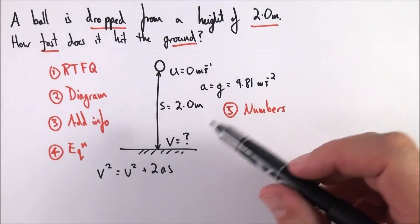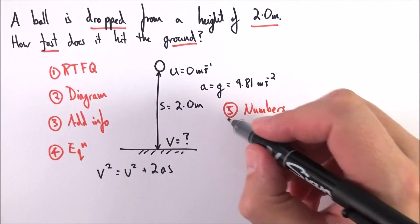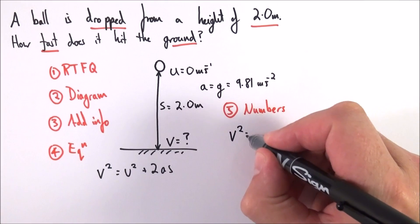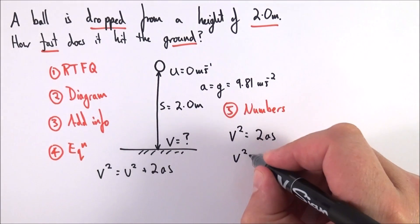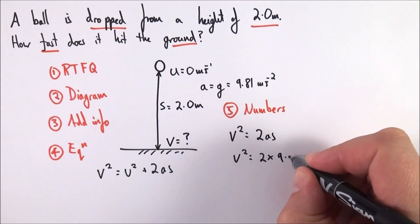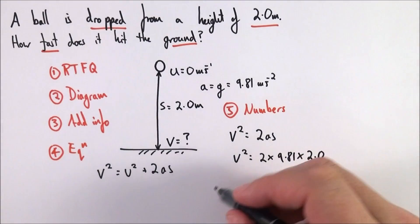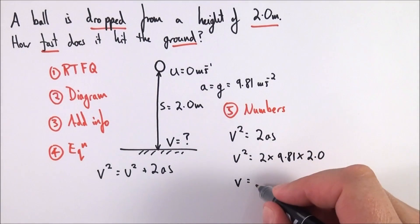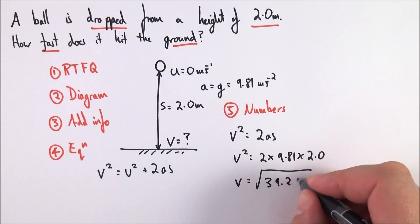Step five, I'm going to put the numbers into this equation. Immediately I can see that U is equal to zero, and therefore I can say that V squared is equal to 2AS. So V squared equals 2 multiplied by 9.81 multiplied by 2.0. I can then say that V is equal to the square root of these numbers multiplied together, which is the square root of 39.24.